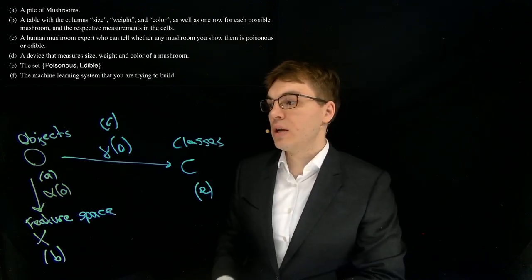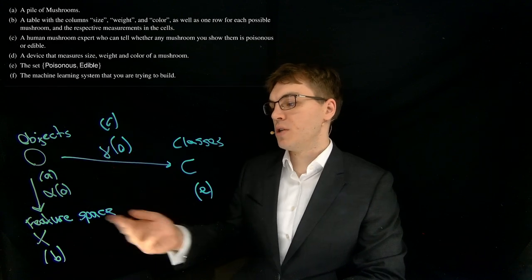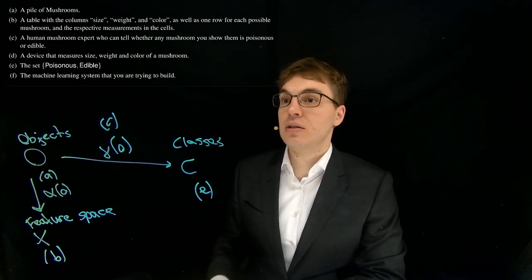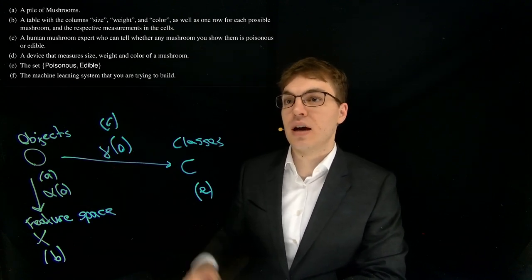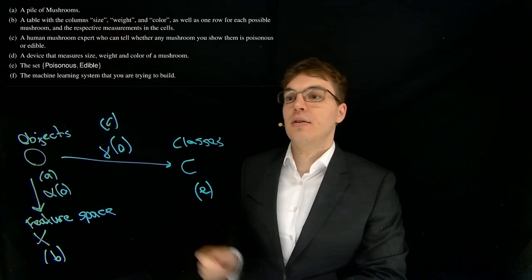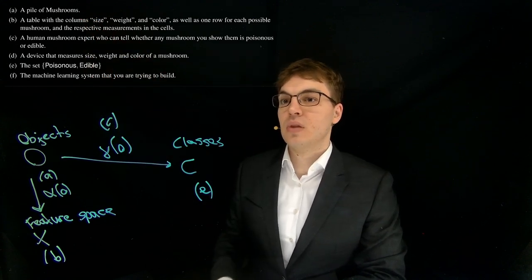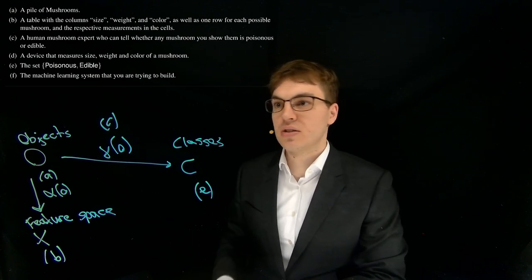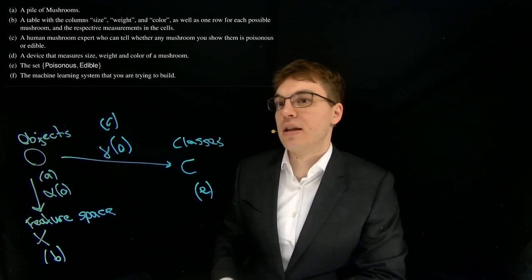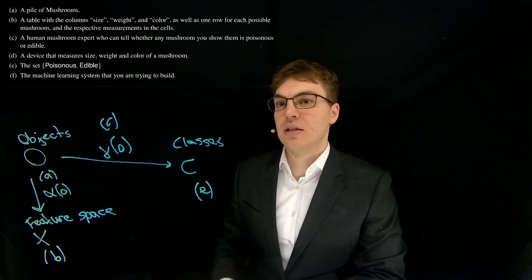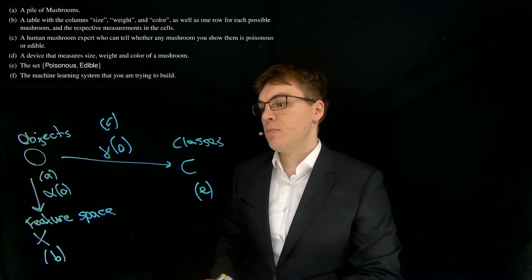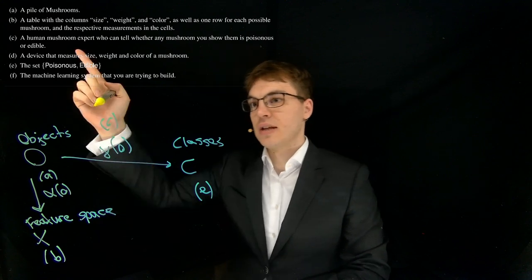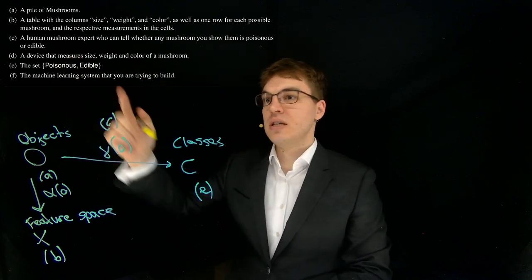What does this mean, putting the object into the feature space? We need to somehow get the size, weight and color in this case for a given mushroom. This can be done either by a human who measures stuff or a device that measures the size, weight and color of a mushroom. This can be done by a device, and this is exactly what we have with D here.